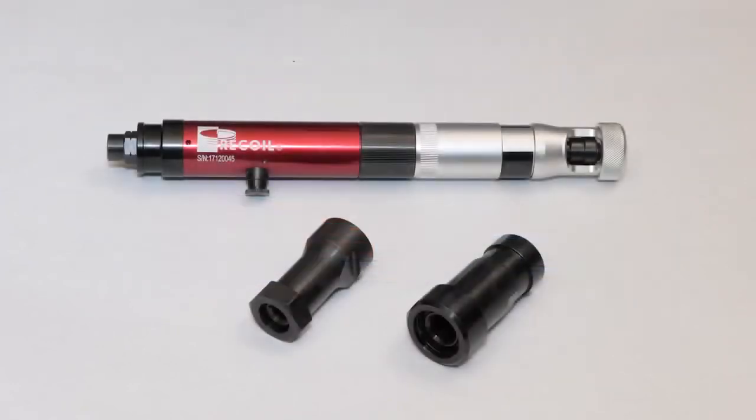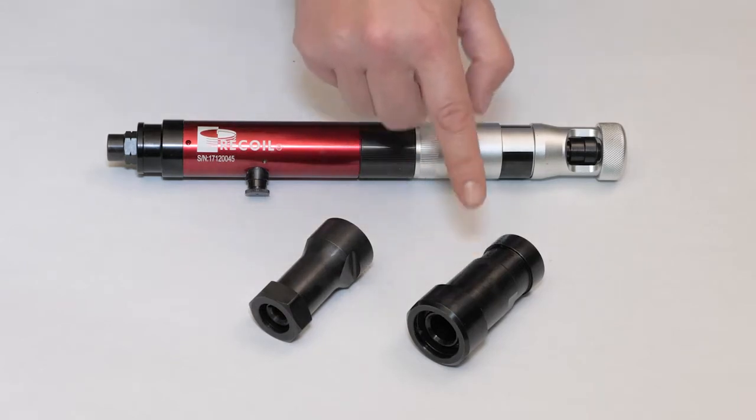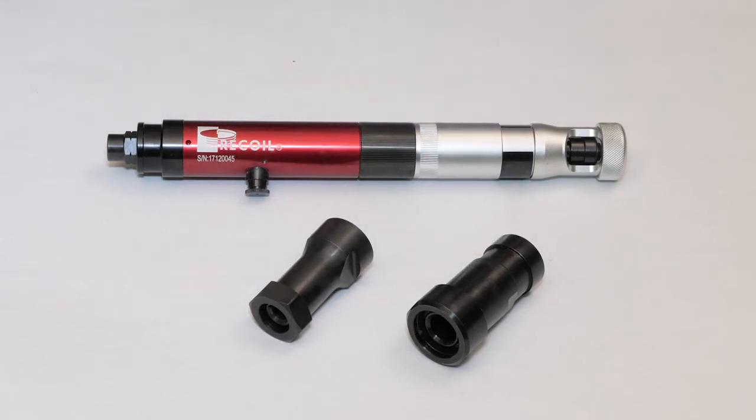The REC 10K Pneumatic Driver is designed to install Recoil Tanged and Tangless threaded inserts and comes with two adapters. The Small Adapter is used for installing threaded inserts from sizes 256 to ¼". The Large Adapter is for installing 5/16" to 5/8" inserts. There is also a Hex Adapter which can run the Hex installation tools for M2.5 to M12.